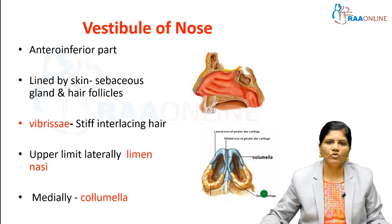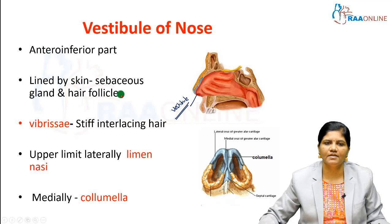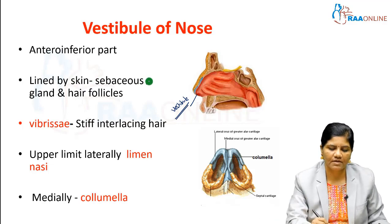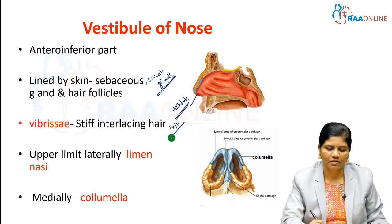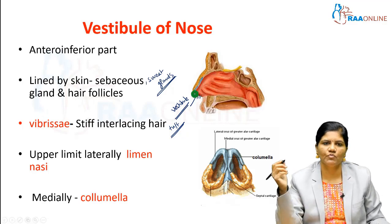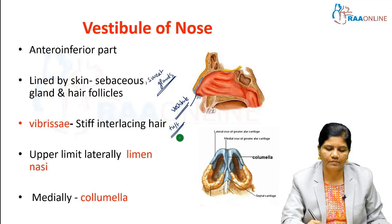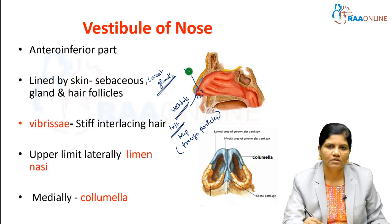The vestibule of the nose is the antero-inferior part. It is mainly lined by skin, and its appendages such as sebaceous glands, sweat glands, and hair follicles are present in this area. Here we can appreciate a tuft of hairs which are stiff, known as vibrissae. These vibrissae or tuft of hairs are present in the vestibule of the nose. Their main function is to trap foreign particles from the air. The upper limit of this vestibule is known as the limen insulae.